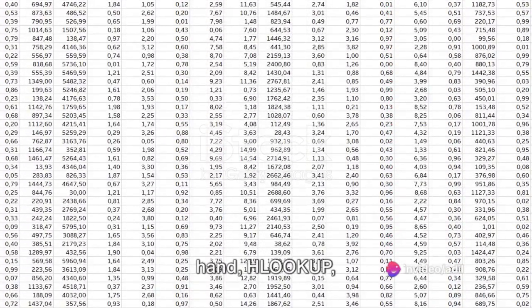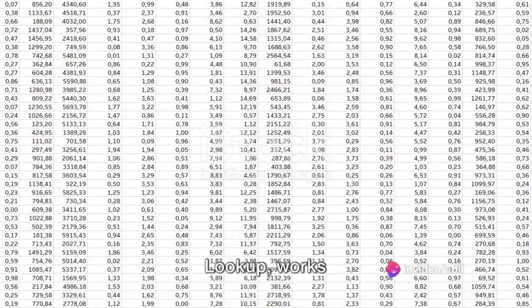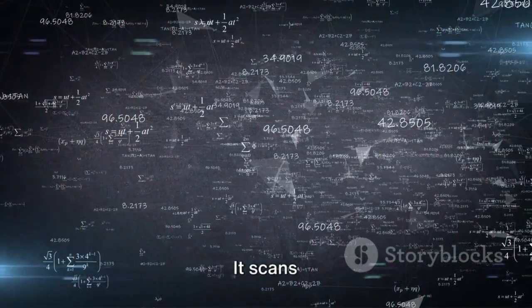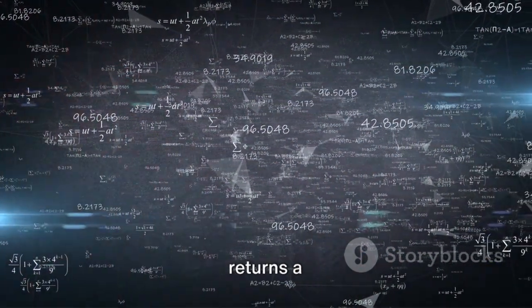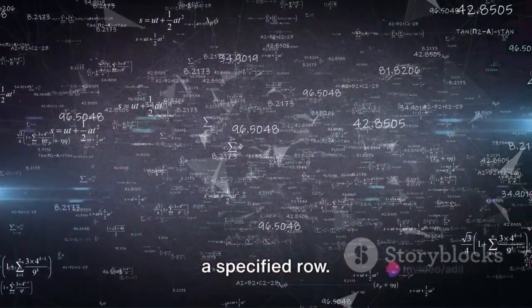On the other hand, HLOOKUP, or Horizontal Lookup, works in a similar fashion but horizontally. It scans horizontally across the first row of a range for a key, and then returns a value from the same column of a specified row.